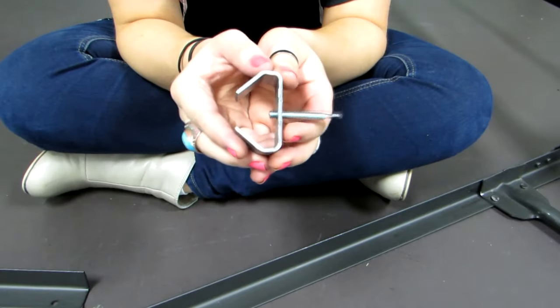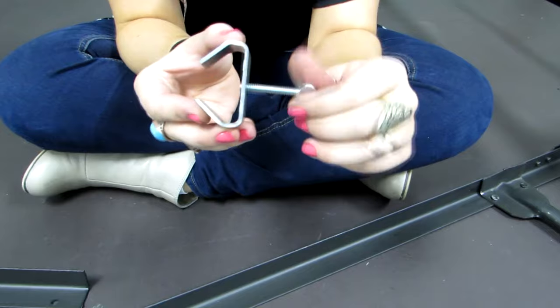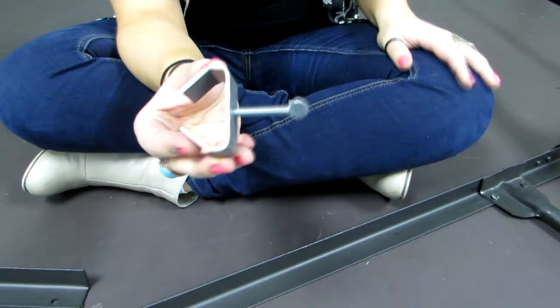So this is what the C-clamp looks like. It's shaped like a C and has a screw going through it, and this is what keeps the two pieces tightened together and stops them from sliding whenever you adjust it to how you need it.